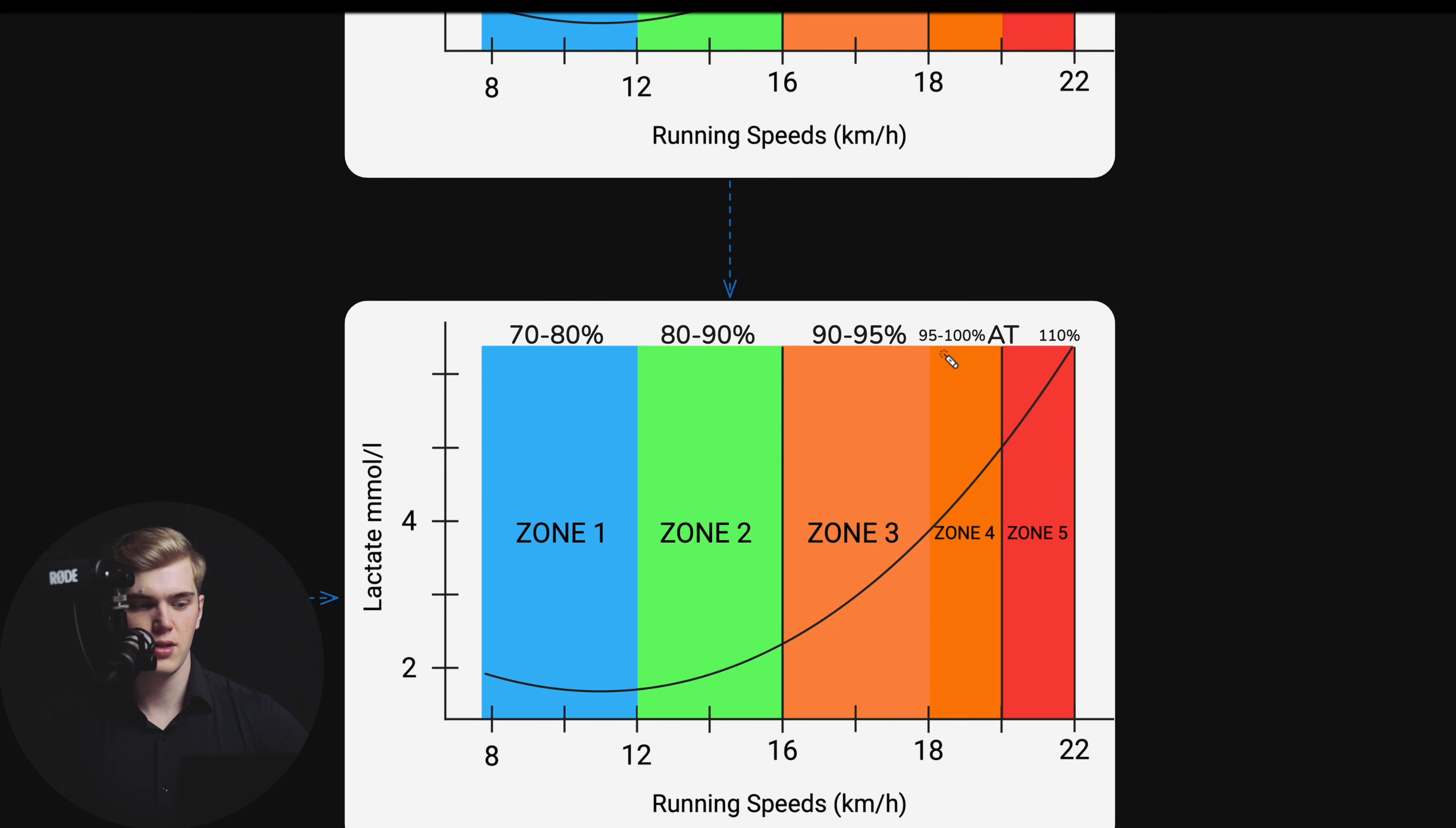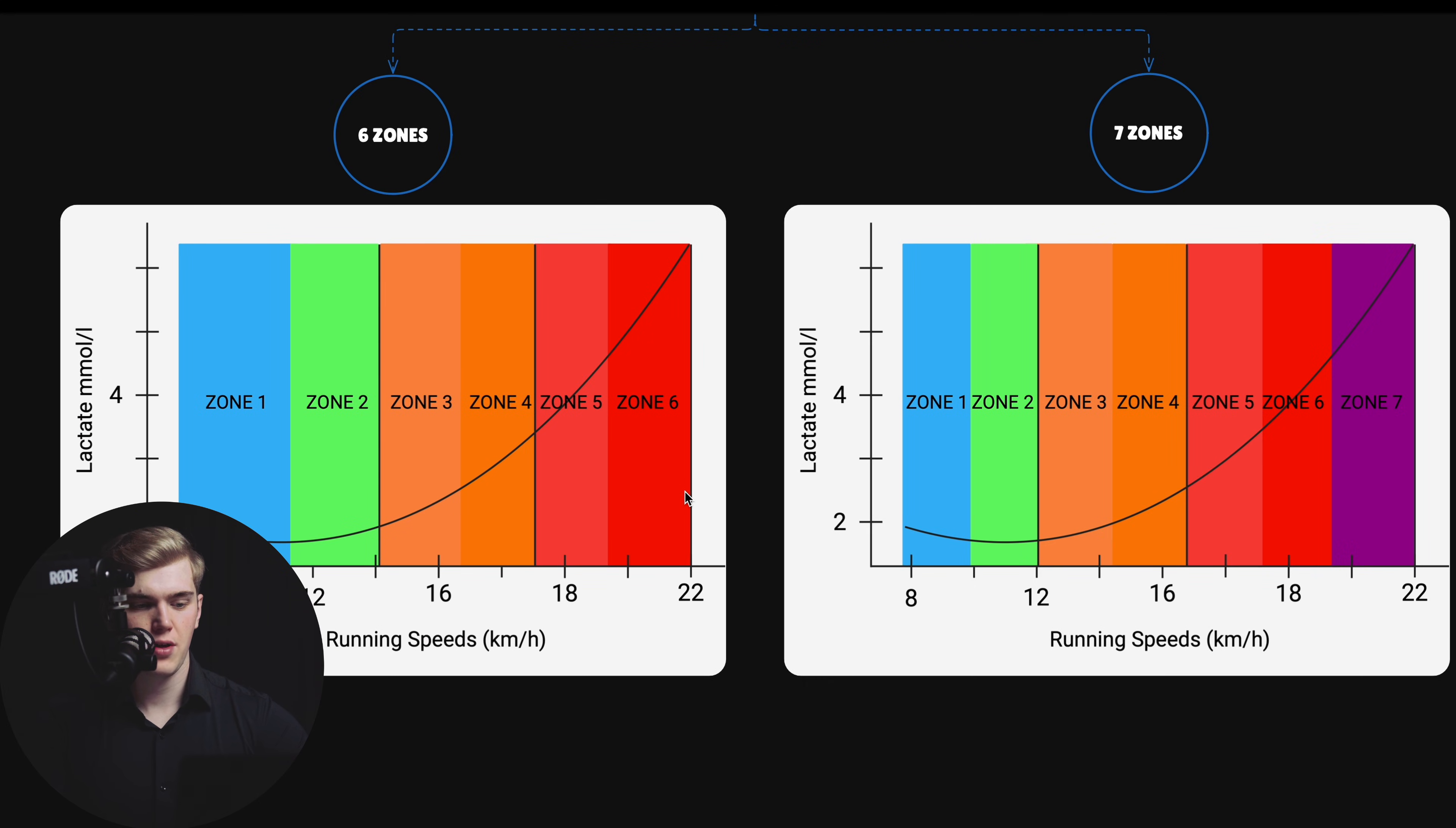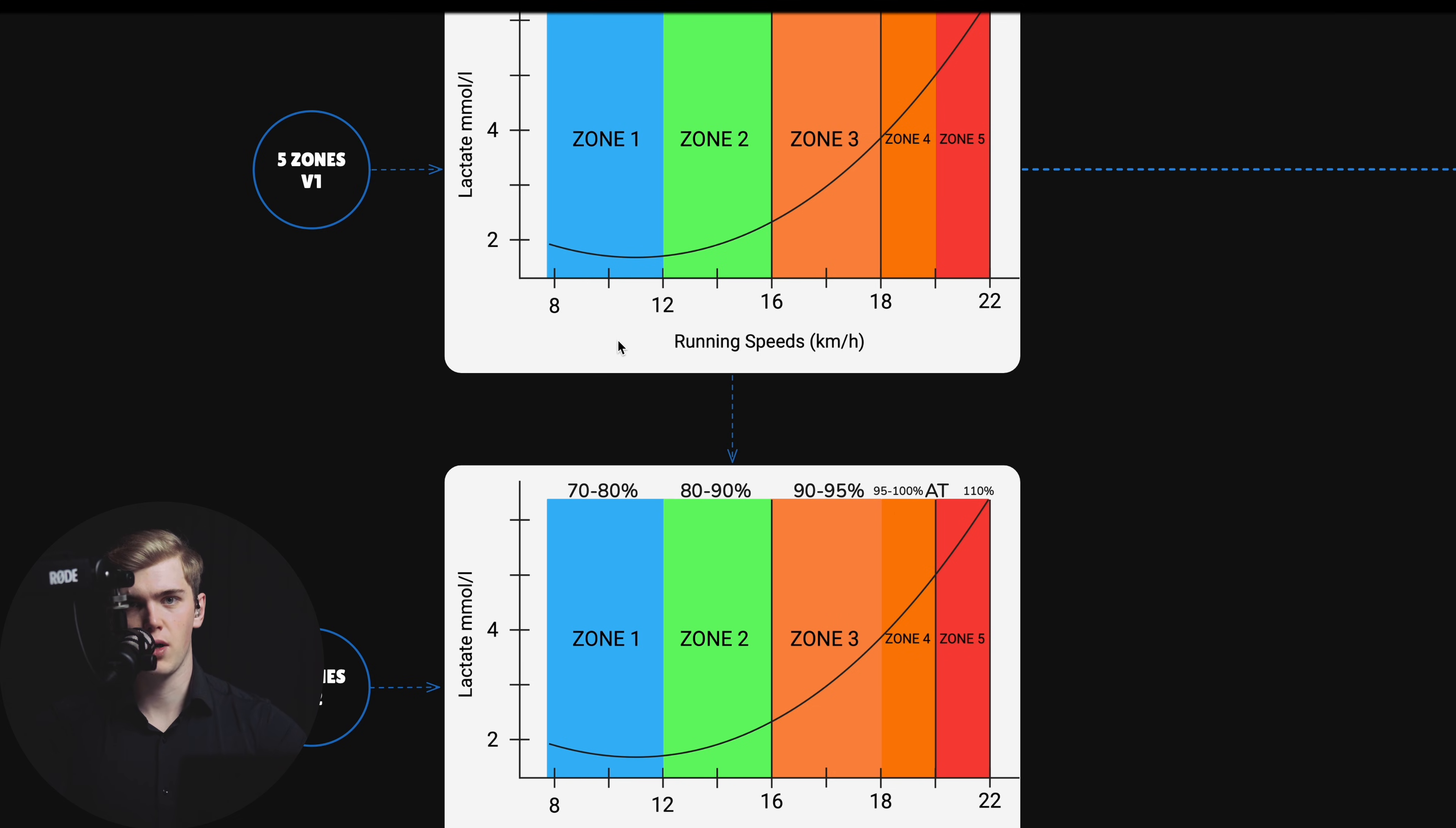Two training zones that are even worse than this are the 6 and 7 zone training models. The reason why these are worse is because they incorporate zone 6 or zone 6 and zone 7, and these are meant to represent anaerobic activity. Combining aerobic and anaerobic activity is even more confusing because they are two opposites of the spectrum. All of these models lead only to confusion because these zones cannot be accurately determined. So I recommend you forget about the 7-zone model, the 6-zone model, and do not use both of the 5-zone models.